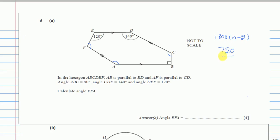We can create an equation: 720 minus the known angles. We have 120, 140, and we still have to find one side. Then there's 90, another unknown, and the side we're looking for — angle EFA. In the exam, write whatever you know; you may not get 4 marks but you can still get 2 to 3 marks.